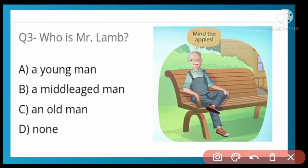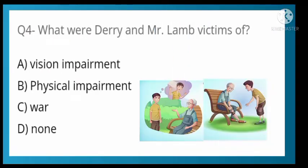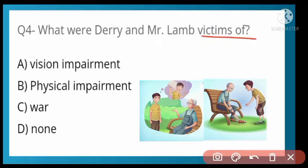What were Derry and Mr. Lamb victims of? Derry is a boy and Mr. Lamb is an old man. The options are: Vision Empowerment, Physical Empowerment, War, or None. Option B is correct — Physical Empowerment, meaning both are victims of physical disability.